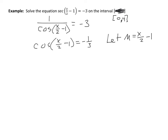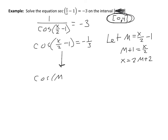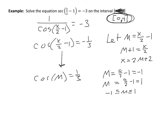Let m equal x/2 − 1, so the equation becomes cosine m equals negative 1/3. To find the modified bounds, I plug the original x-bounds in: at x = 0, m = 0/2 − 1 = negative 1; at x = 4, m = 4/2 − 1 = 1. So m must be between negative 1 and positive 1.